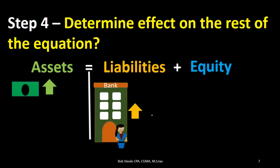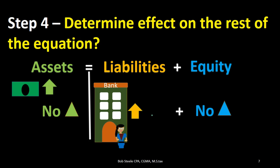Then we want to determine the effect on the rest of the equation — see if there are any other accounts that are affected. Normally there are only two accounts, but it is possible to have more than that, as long as the accounting equation is in balance. In this case, there's no effect on cash beyond what we noted, and no effect on equity. Therefore assets went up and liabilities went up.